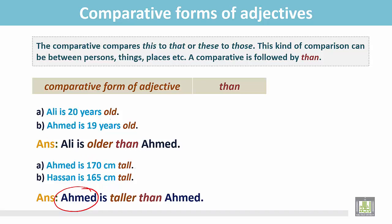In this sentence, Ahmed is taller because he is 170 cm tall and Hassan is 165 cm tall.